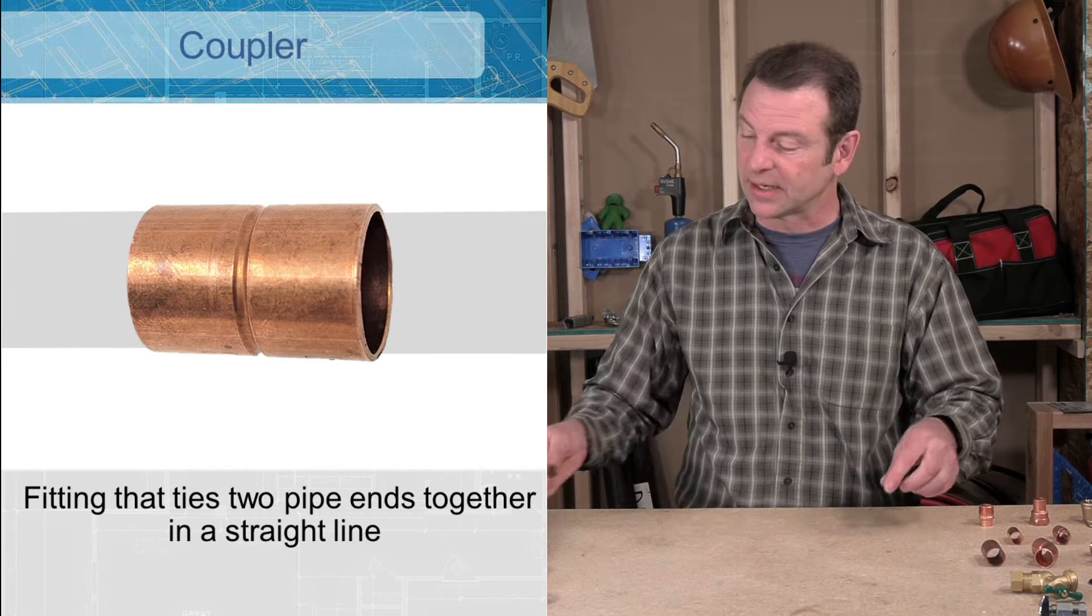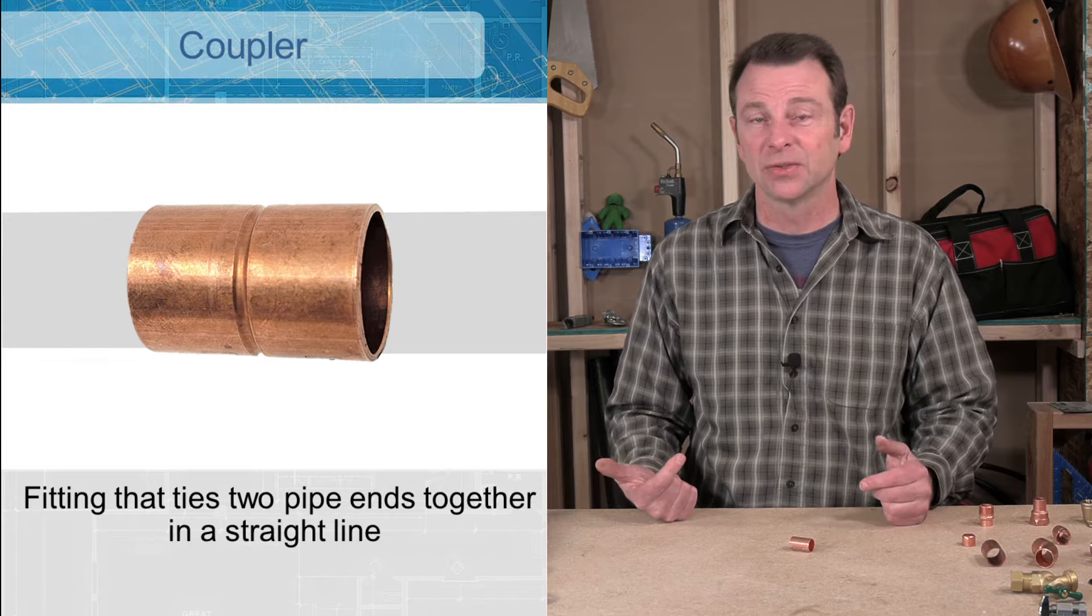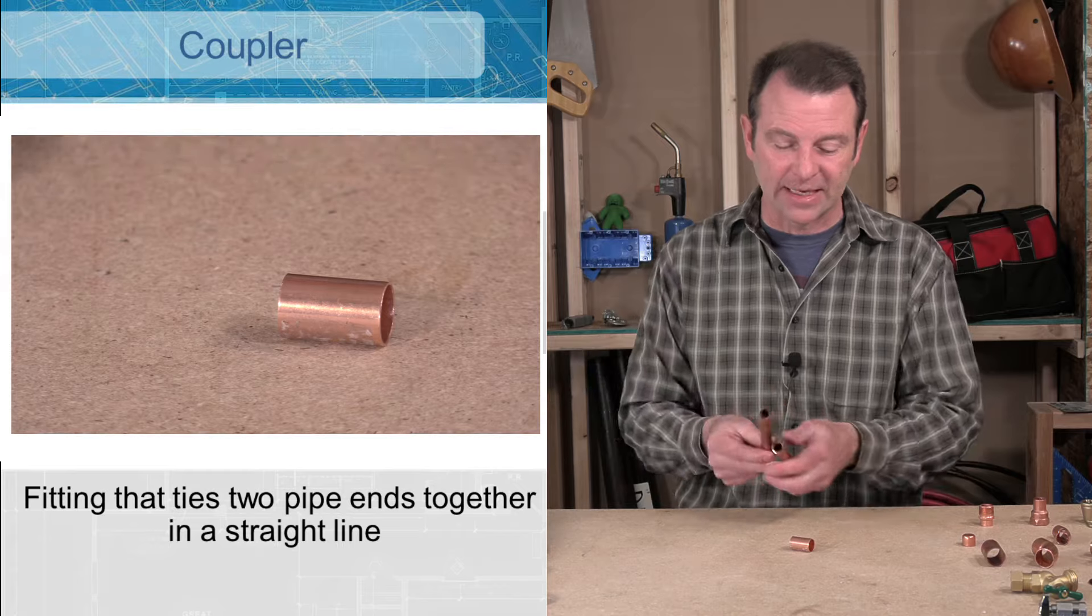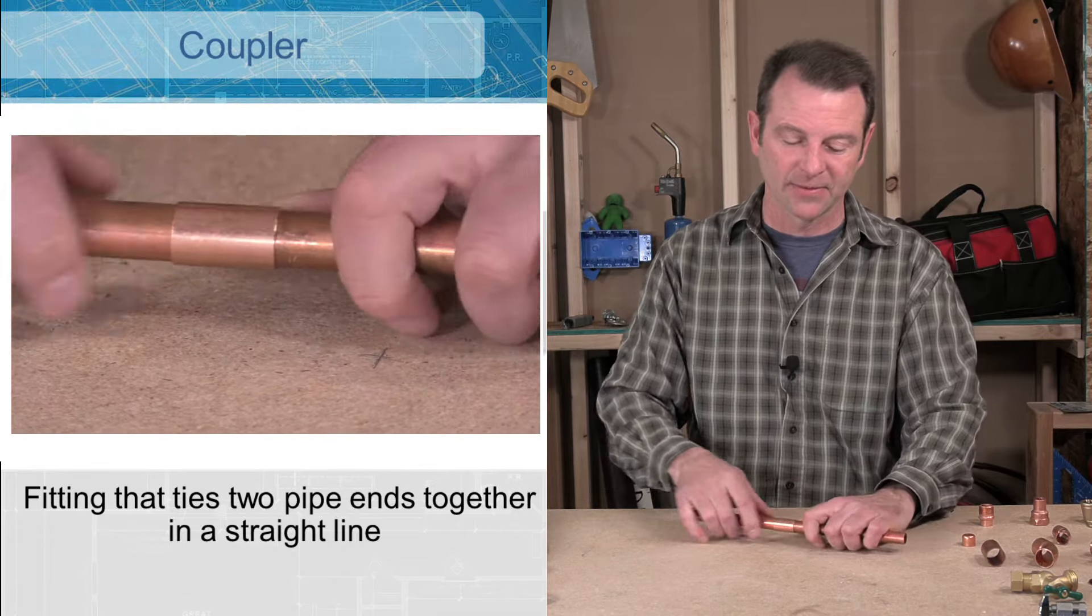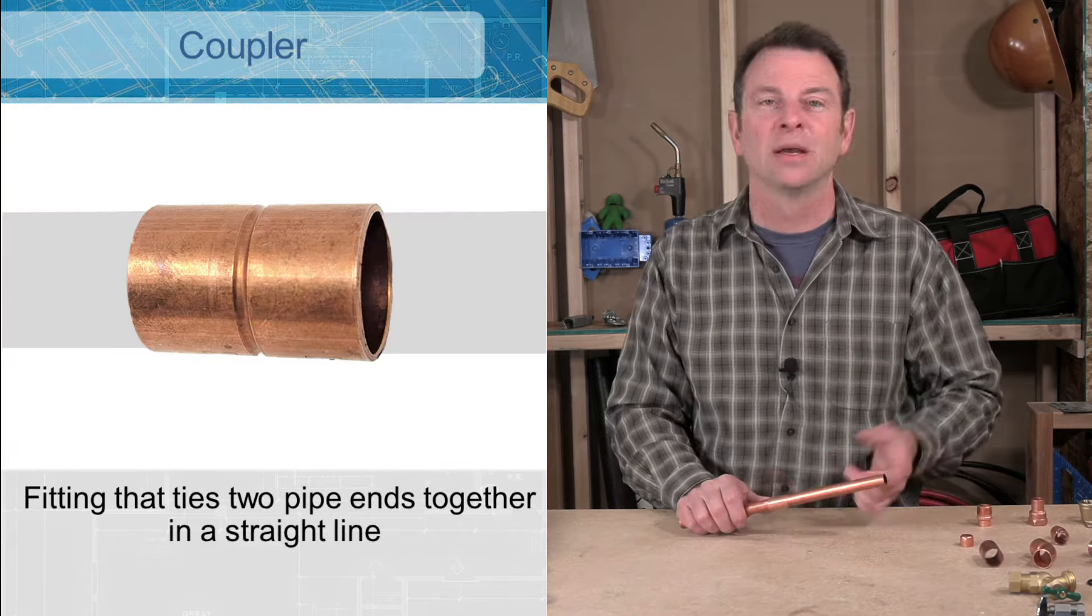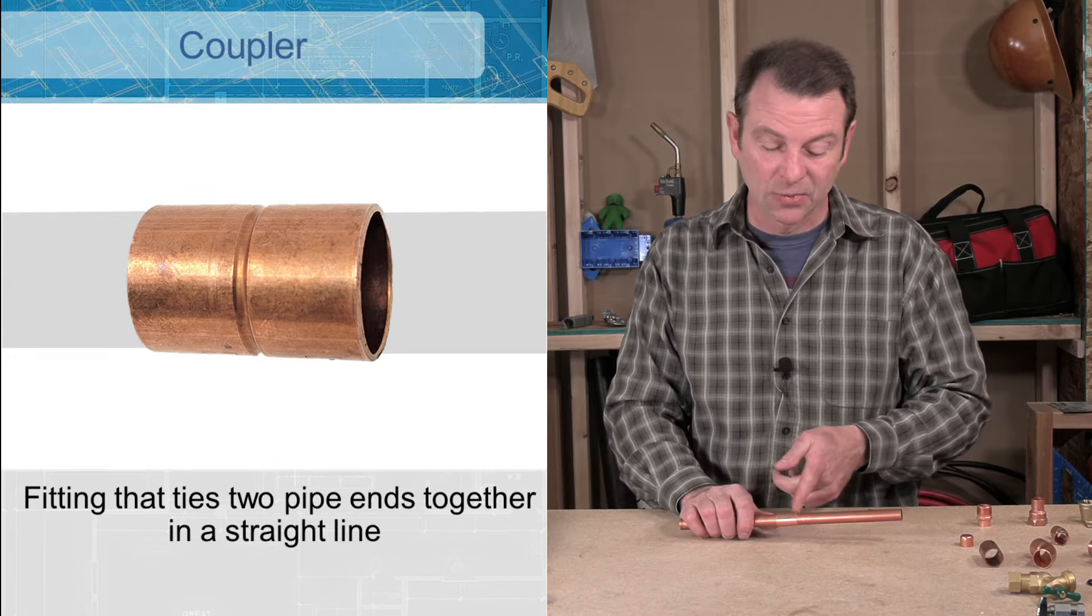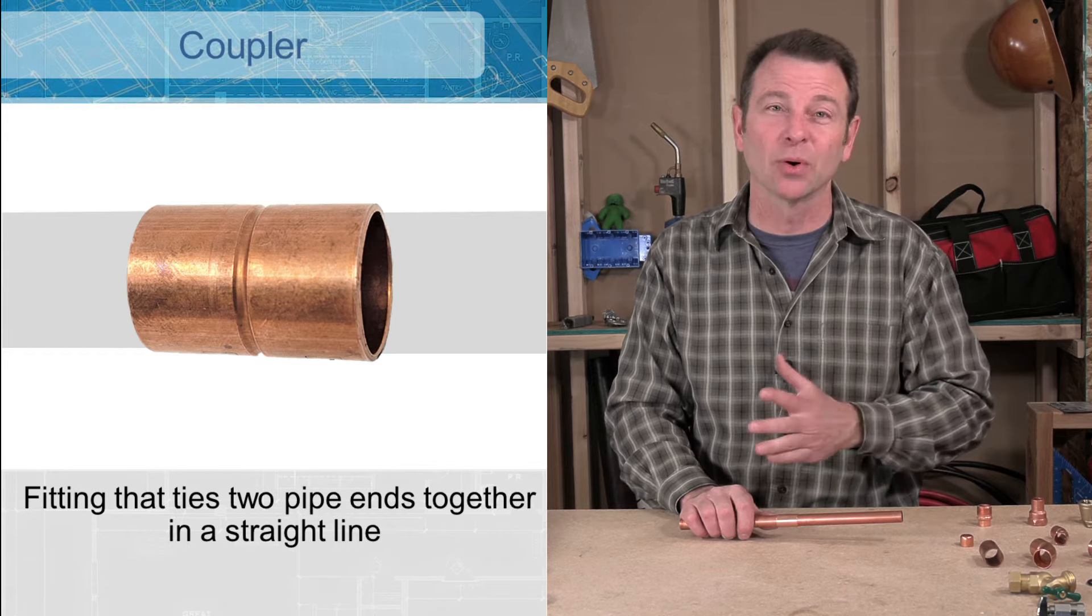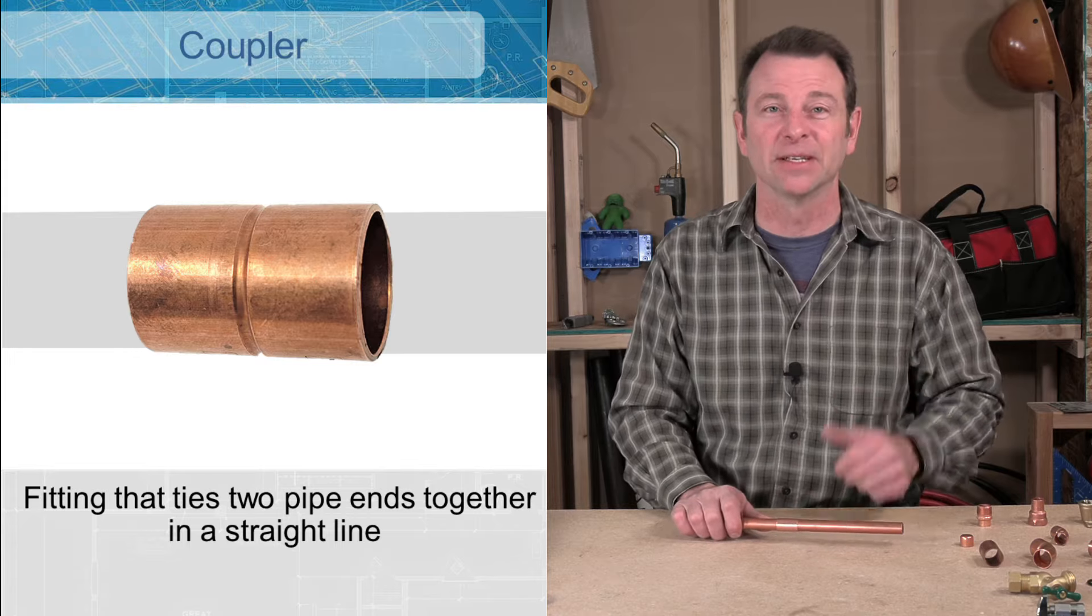The next one is a coupler. A coupler would be a fitting we would use to connect two straight pipes in a straight run. So I have a pipe that comes in from one side slips in here and then a pipe that comes in from this side slips in here and it makes a connection between the two. You can't see this, but there's a small notch on the inside of this fitting that will stop the pipes at the appropriate place. It's really important we get that full connection between everything. So make sure that you bottom out your pipes and your fittings.